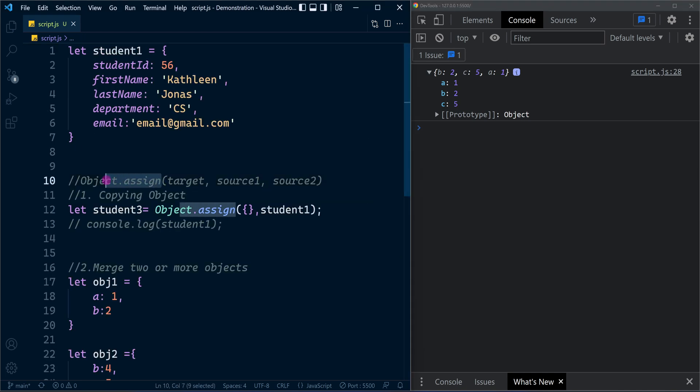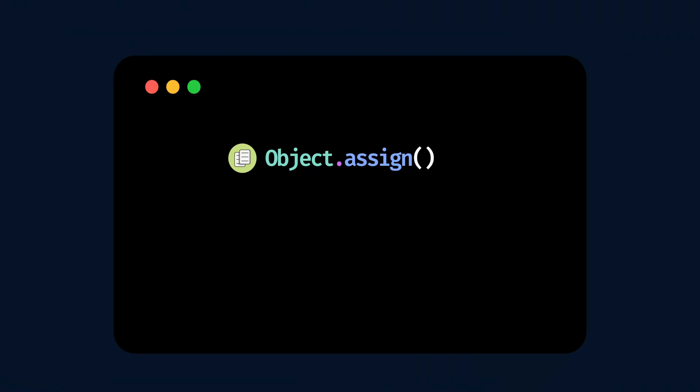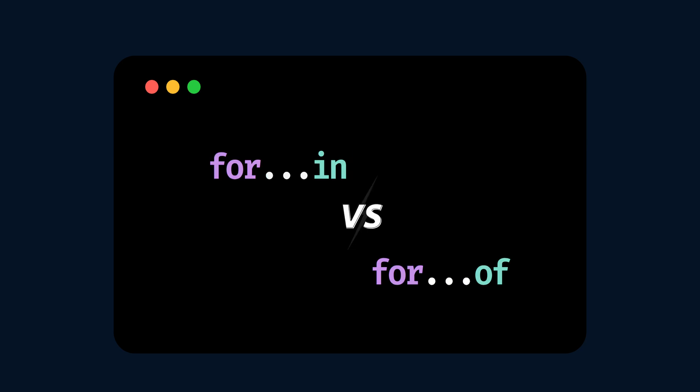So that's how Object.assign works. We are only discussing the most important, frequently used methods, so pay attention closely — you will definitely benefit from this session. Before discussing the next method, we want to get familiar with the iteration statements for...in and for...of. Let's check them in action.